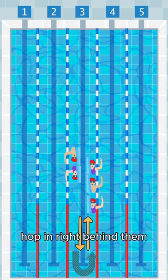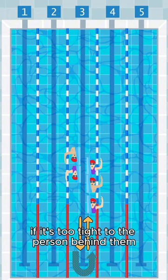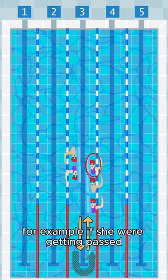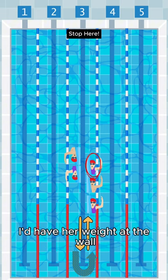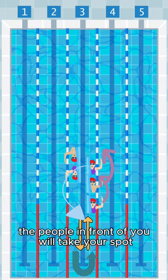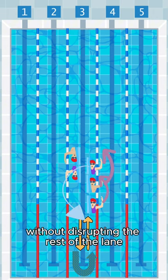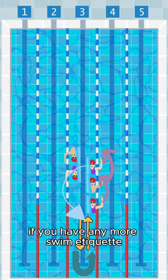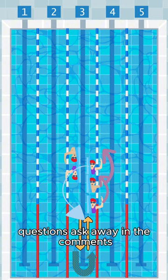When the person passes you, hop in right behind them. If it's too tight to the person behind them, wait at the wall until the two athletes behind her pass, and then go. The people in front of you will take your spot, and you'll be good to go without disrupting the rest of the lane. If you have any more swim etiquette questions, ask away in the comments.